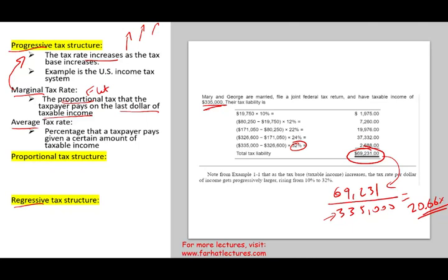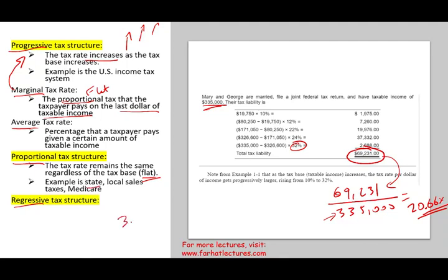Now the next tax structure we're going to be looking at is proportional. So proportional. What is proportional? Simply put, we just kind of mentioned it, it's a flat. The same tax rate is used regardless of how much money you make. So it's, for example, 10%, 15%, and whatever you make, $10, $100, $10,000, or 10 million, you'll pay a flat rate.